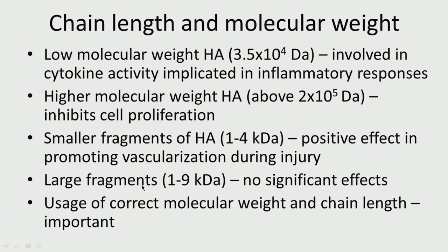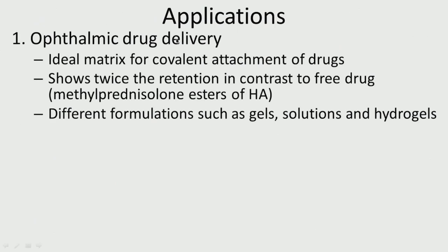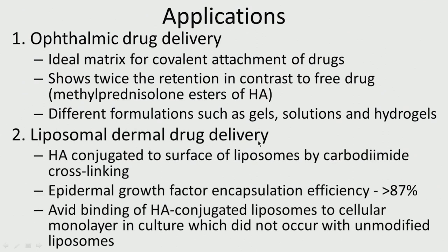One must select or design the correct molecular weight hyaluronic acid. Applications: it is used in ophthalmic drug delivery because it absorbs a lot of moisture and can be used in the ocular region. It is an ideal matrix for covalent attachment of drugs because it has a negatively charged C=O group — this shows twice the retention compared to free drugs. It can be formulated as gels, solutions, and hydrogels. It is also used in liposomal dermal drug delivery — hyaluronic acid conjugated to the surface of liposomes through crosslinking can encapsulate almost 80–90% of the drug.